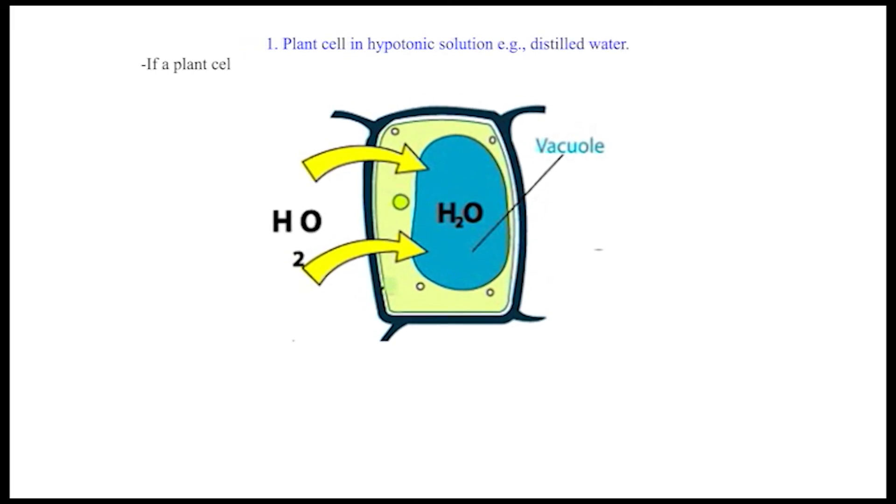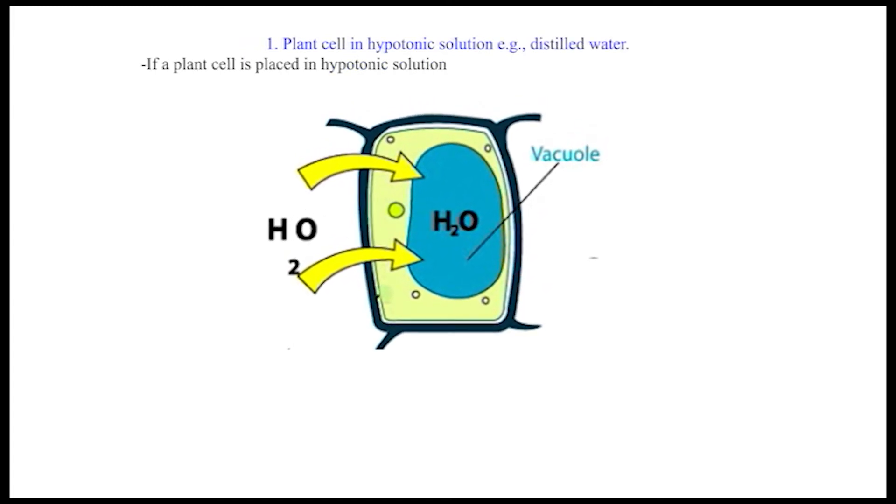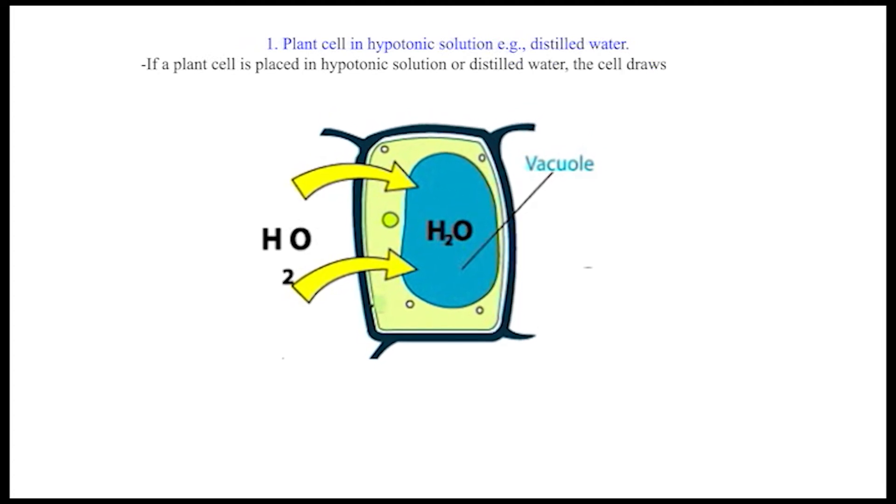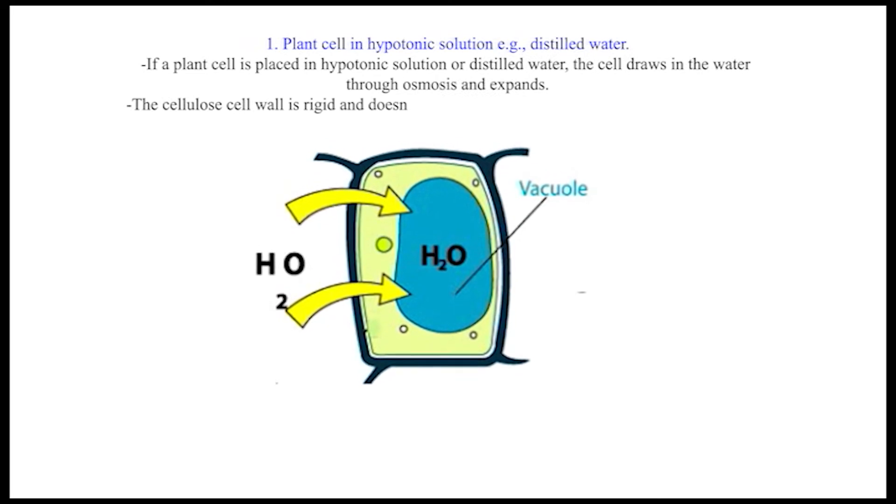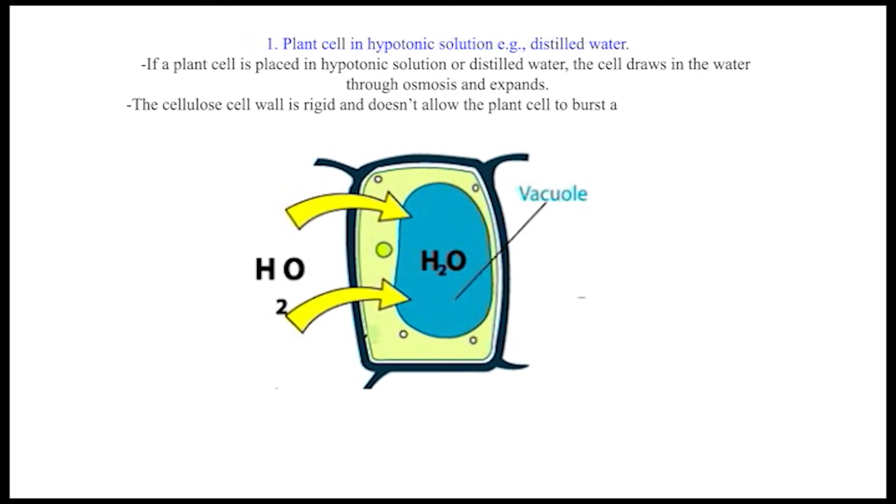If a plant cell is placed in hypotonic solution or distilled water, the cell draws in water through osmosis and expands. The cellulose cell wall is rigid and doesn't allow the plant cell to burst, as is the case in animal cells.